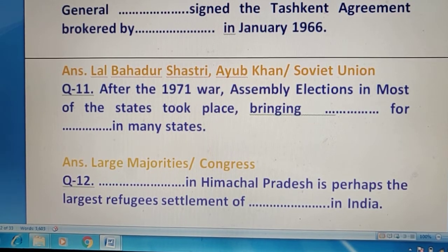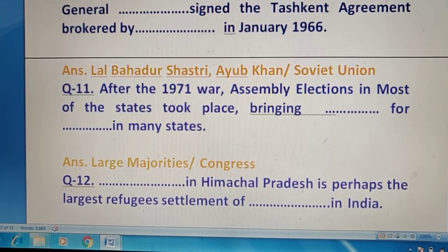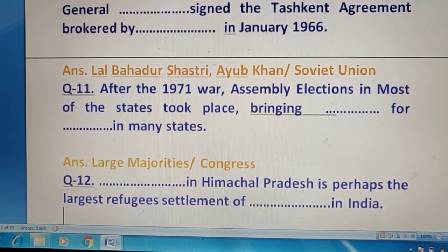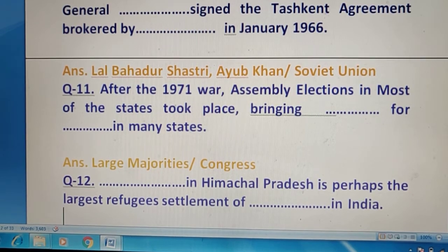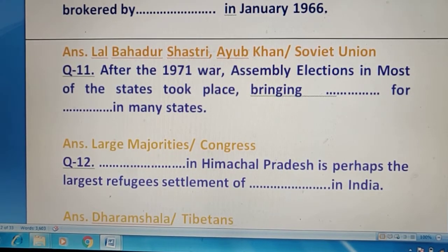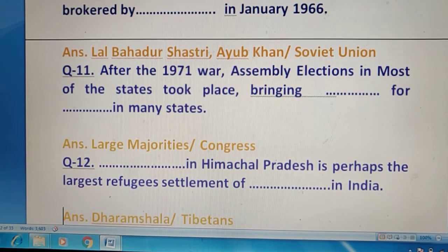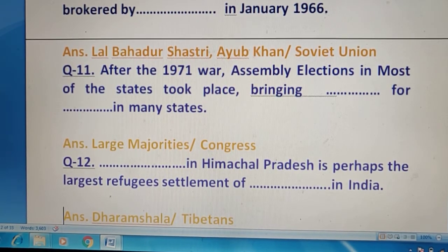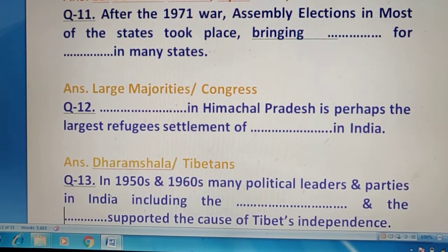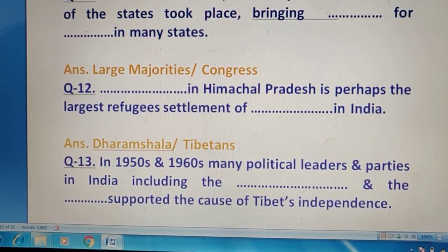Question 12 — Himachal Pradesh में जो blank है, वो perhaps the largest refugee settlement है — जगह का नाम बताना है। Dharamshala जो है वो Tibetans की बहुत बड़ी settlement है। अब question 13 की तरफ चलते हैं।